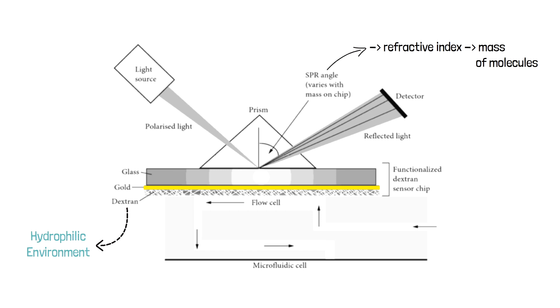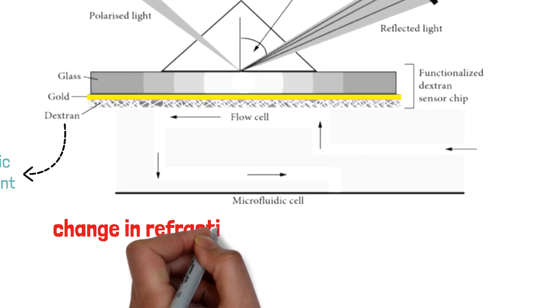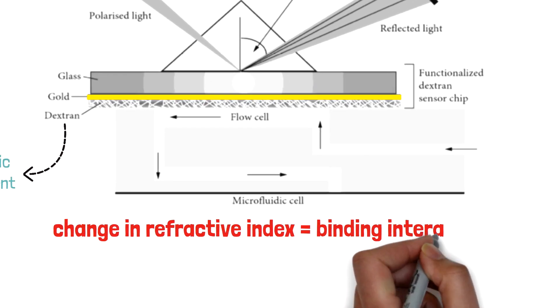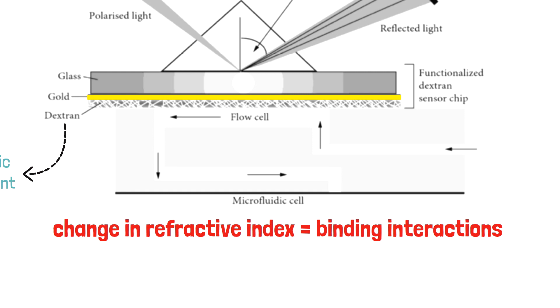As the analyte binds, the SPR angle changes which causes the refractive index to change. It is this change in the refractive index, referred to as the response unit, that is measured over the course of the analysis to determine binding interactions.